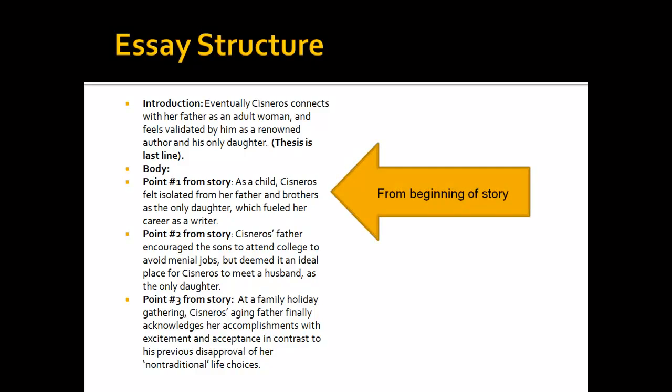Point number two, again from the story. Cisneros' father encouraged the sons to attend college to avoid menial jobs but deemed it an ideal place for Cisneros to meet a husband as the only daughter. So that is how you would summarize main point number two from the story. Also note this point comes from around the middle of the story.